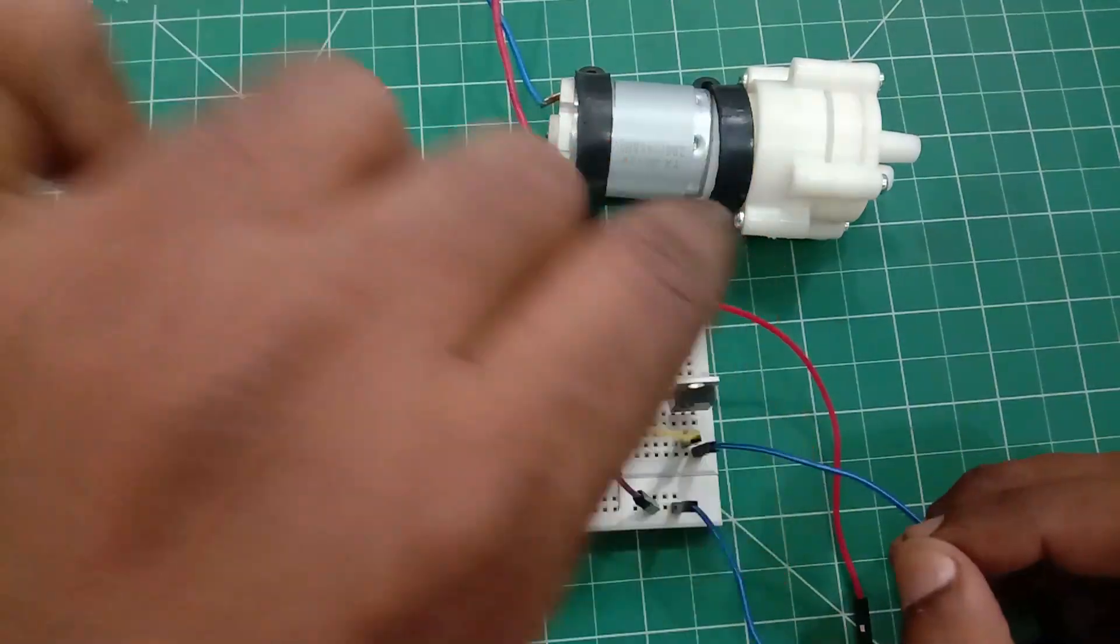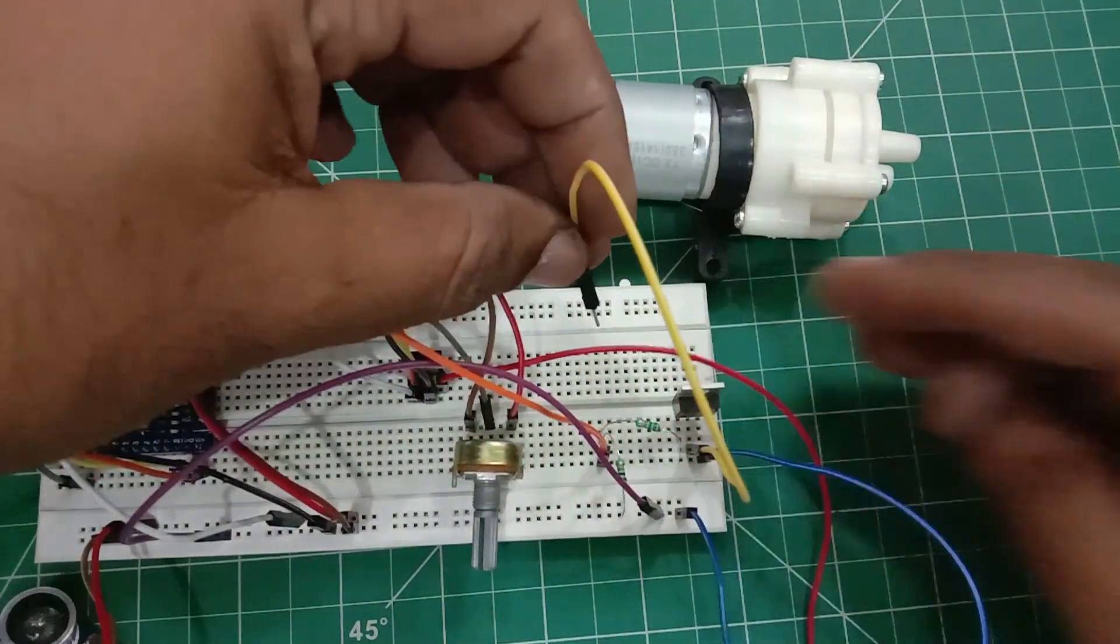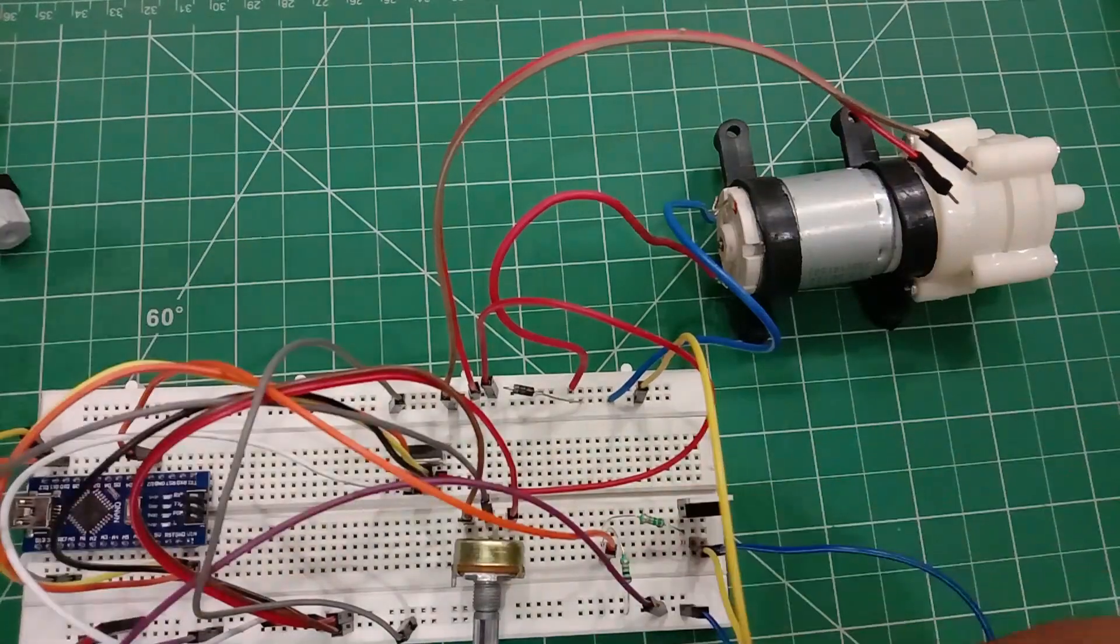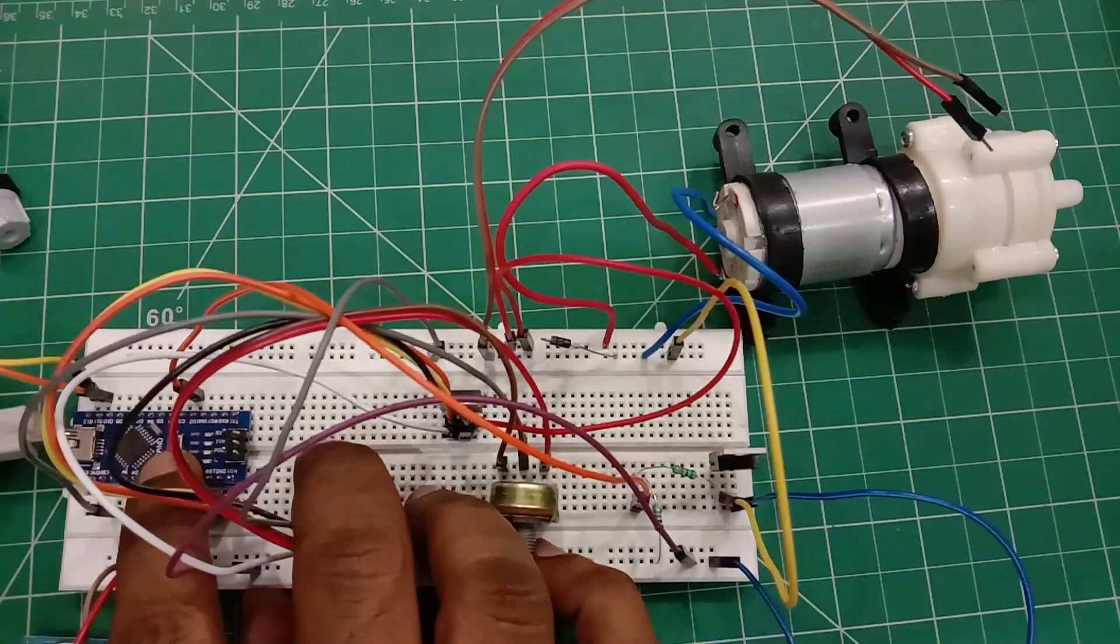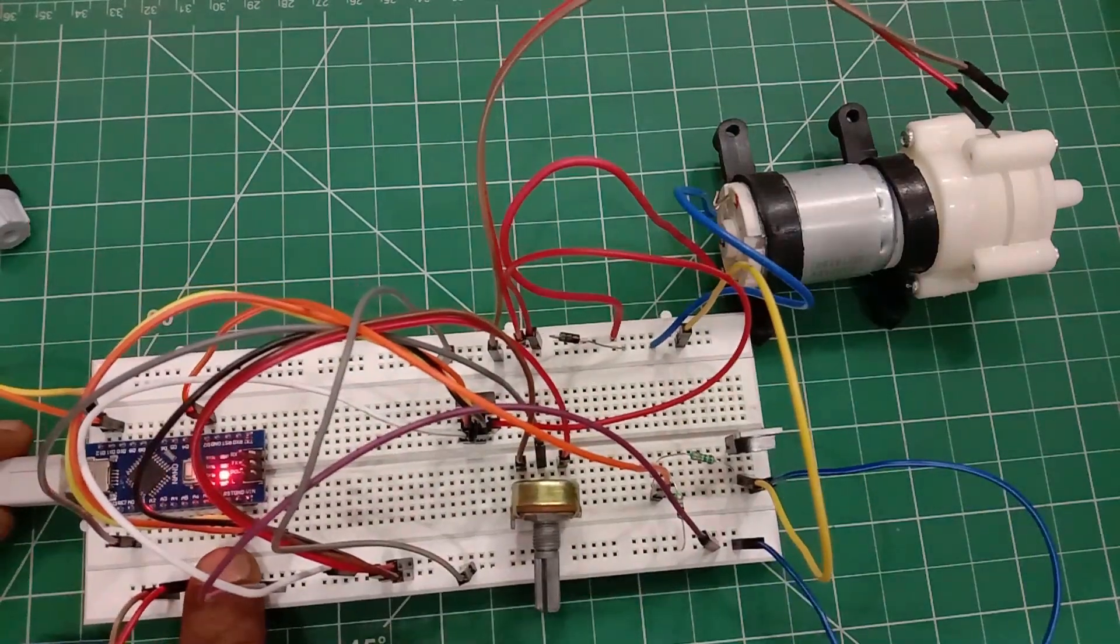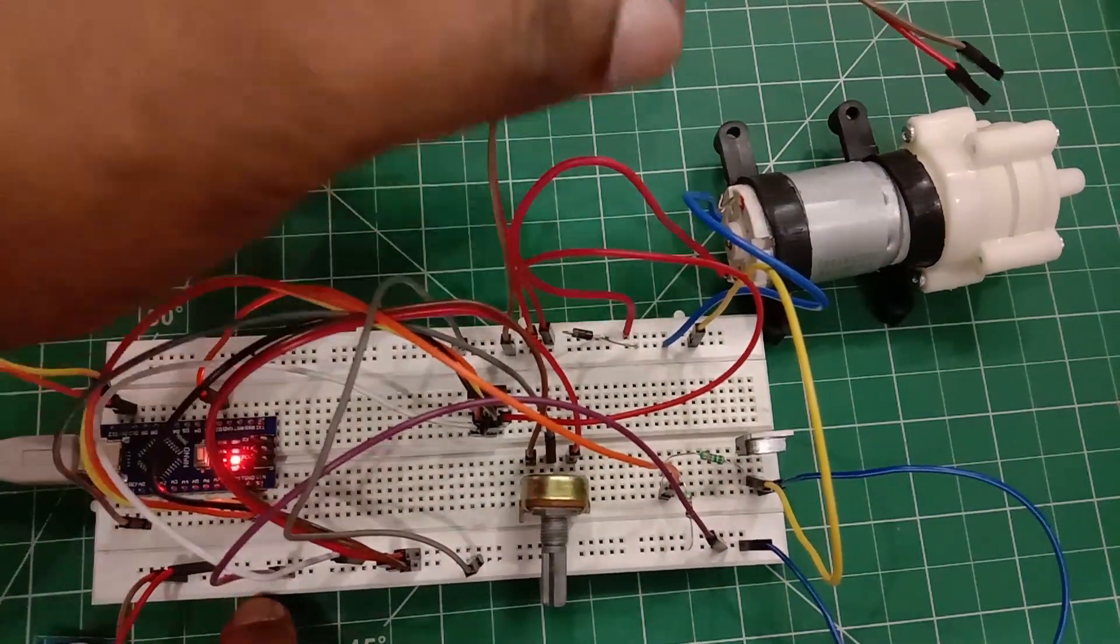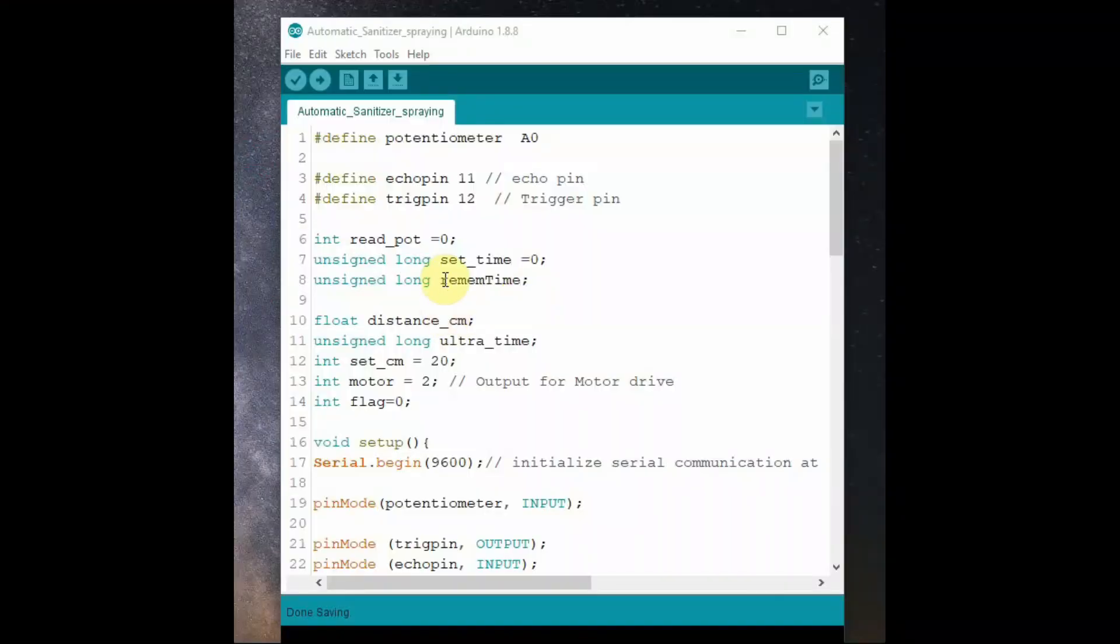Now connect the USB cable to Arduino Nano to upload the code. Now let us see the code. First we define the four pins: A0 is potentiometer pin, echo pin is 11 and trigger pin is 12. And then the variable declaration, we use integer variable read_pot to store the potentiometer value.